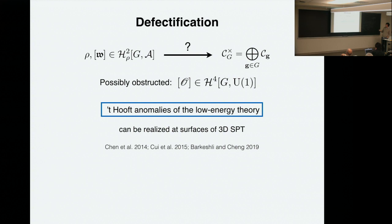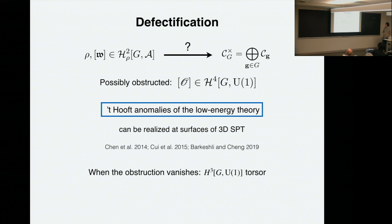The computation of this obstruction class, in the case of rho equals 1, was done first in a paper by Xie, Levin, Gu, and Ashvin. When obstruction vanishes, it means there's no 't Hooft anomaly. Then you have different solutions corresponding to a lower cohomology — specifically H^3(G, U(1)), which just means stacking SPTs to your SET phase. It doesn't really tell you whether it's the same or not — it just means you can change your solutions by a 3-cocycle.